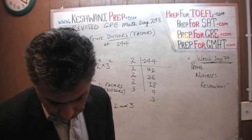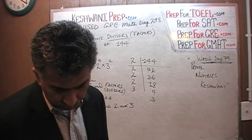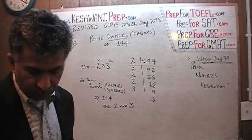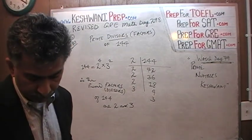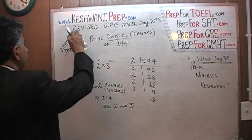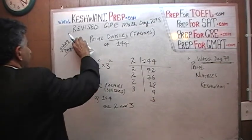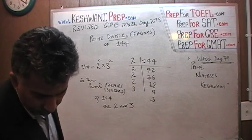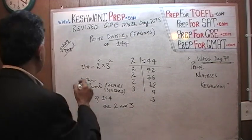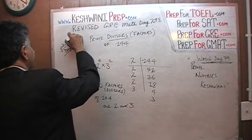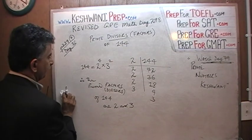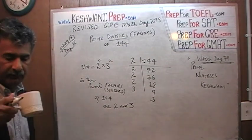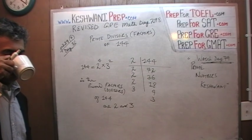I am going to skip number 6 for the time being. Let's move on to number 7. Number 7 is about finding the prime factorization of 585 — something we did on day number 82. Now we are looking for the prime factorization of 585.